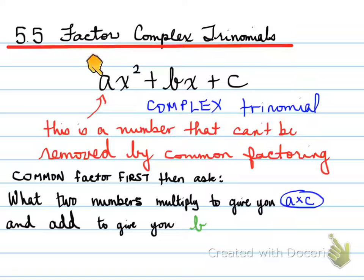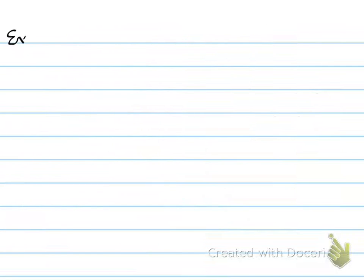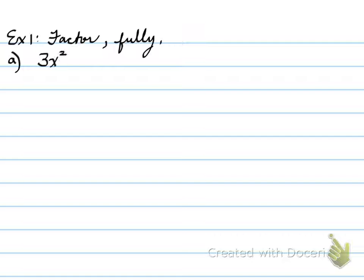If you force yourself to remember a times c, even when we do simple trinomial factoring — remember the a value was 1, so 1 times c is still a times c, and that's our product. Moving forwards, we're going to look at lots and lots of examples. The first one is 3x squared minus 5x minus 8.